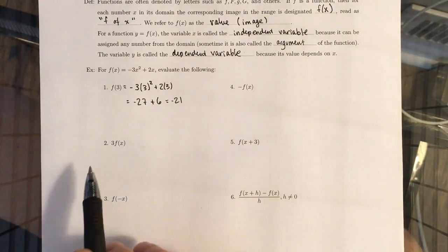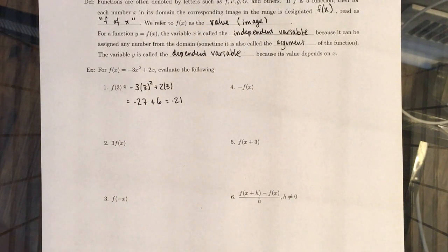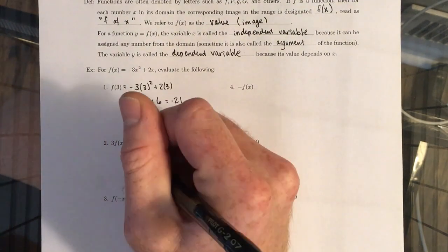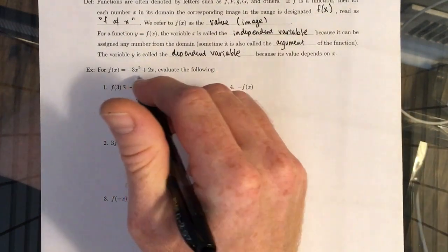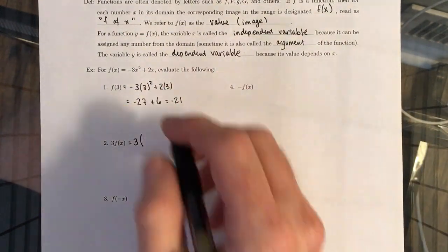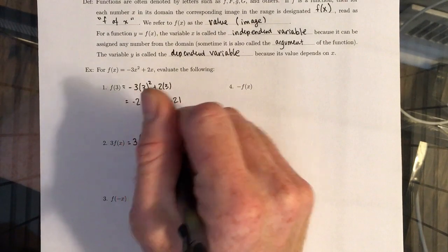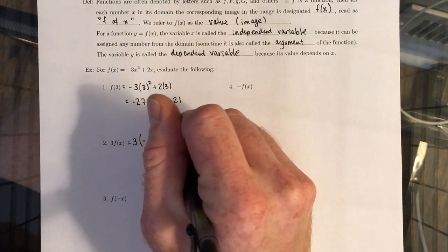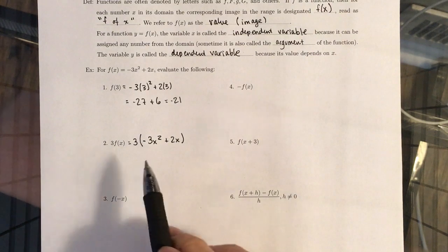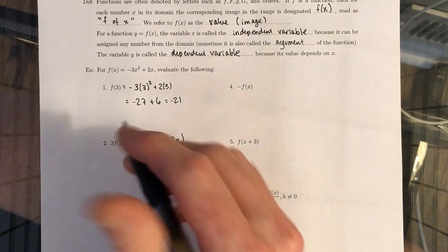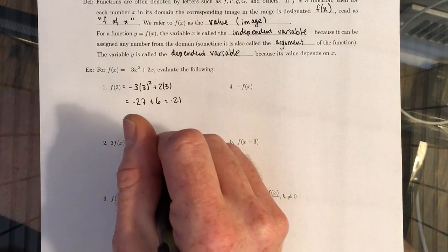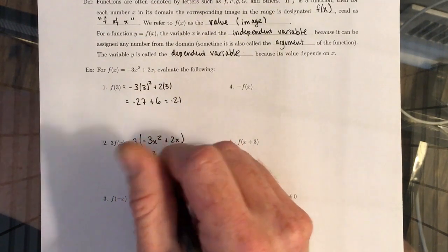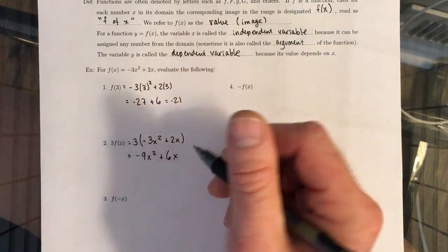Next one, this 3 is on the outside. So that is going to be affecting the way the function is behaving. So we need to do 3. And then wherever we have an F of X, we just plug this whole beast in right here. It gives us negative 3X squared plus 2X. And now we have to distribute this 3 over this addition. So we get 3 times negative 3X squared, which gives us negative 9X squared. Plus then 3 times 2X, which gives us 6X.